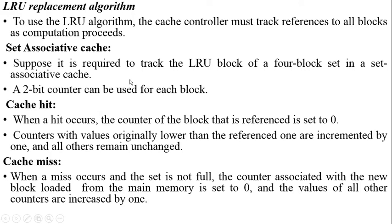We can explain this LRU algorithm with respect to a four-way set-associative cache. It is required to track the LRU block of a four-block set, meaning each set in the cache contains four different cache blocks. A two-bit counter can be used for each block inside the set, so each block is associated with a two-bit counter.